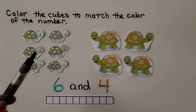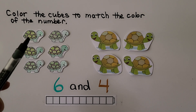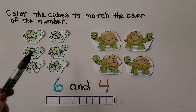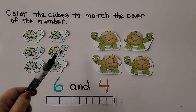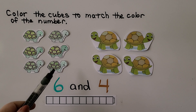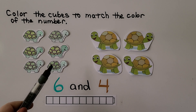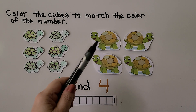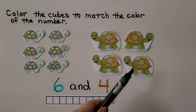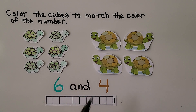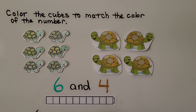Here we have a set of turtles. We have one, two, three, four, five, six turtles that are small. We have one, two, three, four larger turtles. We can color the cubes to match the color of the number. This is six.